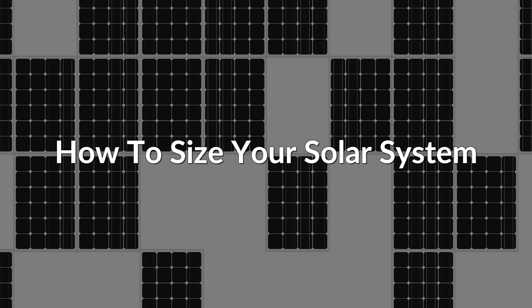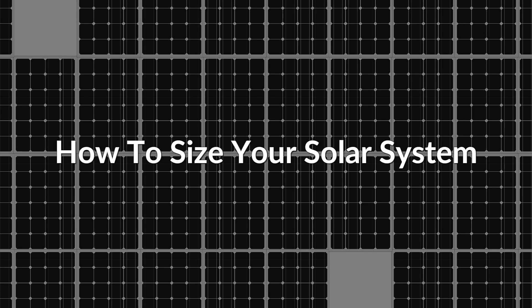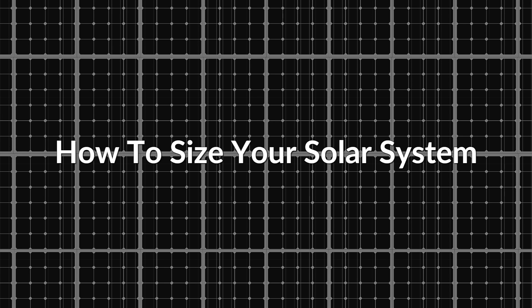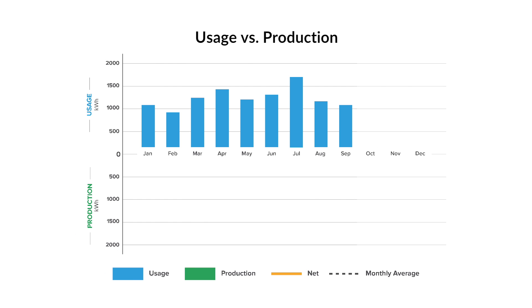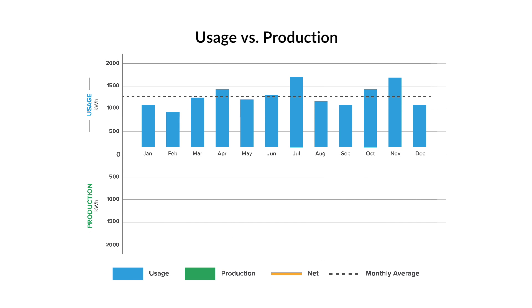A solar company will size your solar system by evaluating your annual electricity consumption. Since your energy usage will fluctuate monthly, you will want to find your average monthly usage over the course of a year. Typically, you'll want to design a system to cover all of this electricity usage.